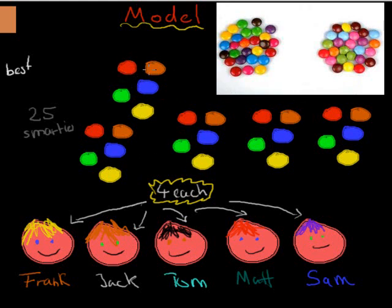So five strawberry, five orange, five blueberry, five green apple, and five lemon. I've got five boys: Frank, Jack, Tom, Matt, and Sam. Each of those five boys gets to eat four Smarties, which means by the end we should have five left over.